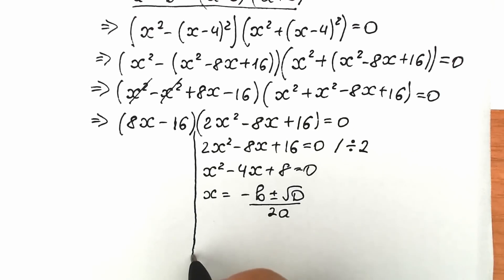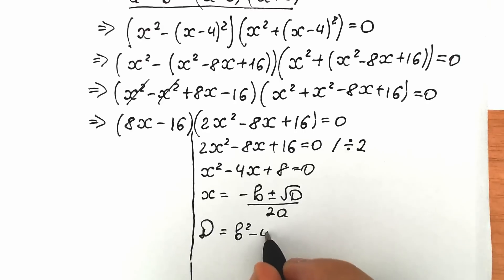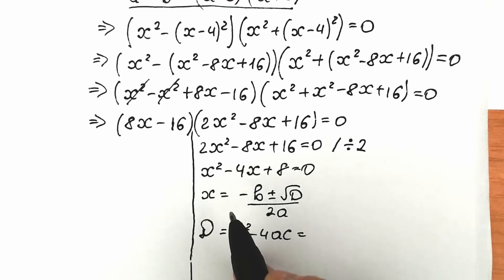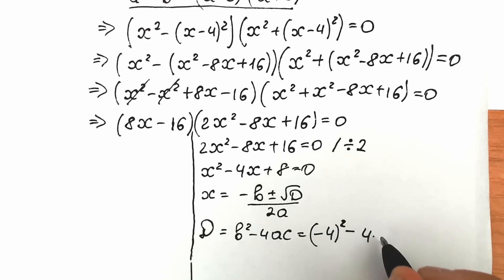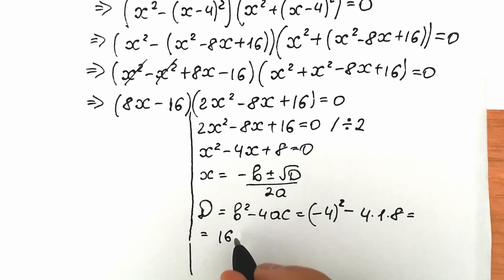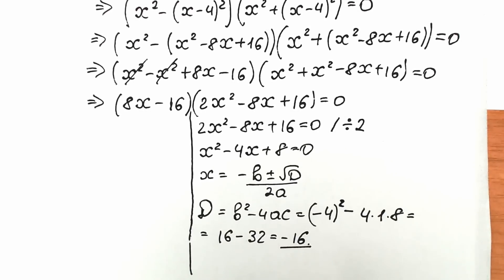Let's find our discriminant. Our discriminant equals b squared minus 4ac. Let's plug in all the values: b equals minus 4, so we have minus 4 squared minus 4 times 1 times 8, equal to 16 minus 32, equal to minus 16. We can easily see that our discriminant is negative.